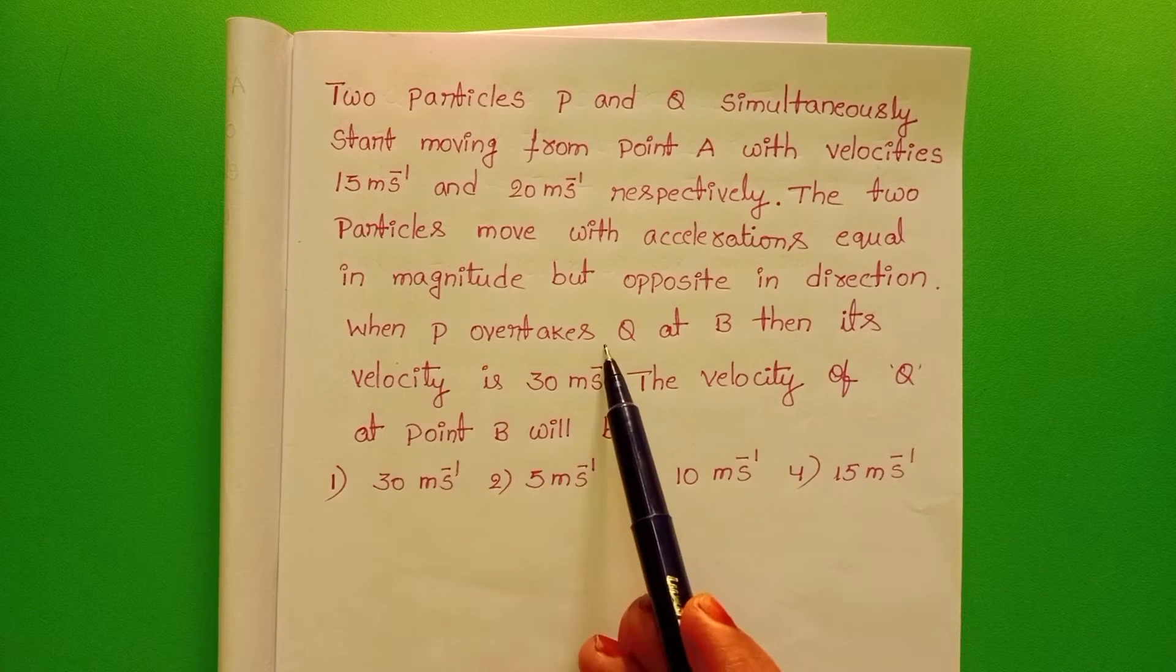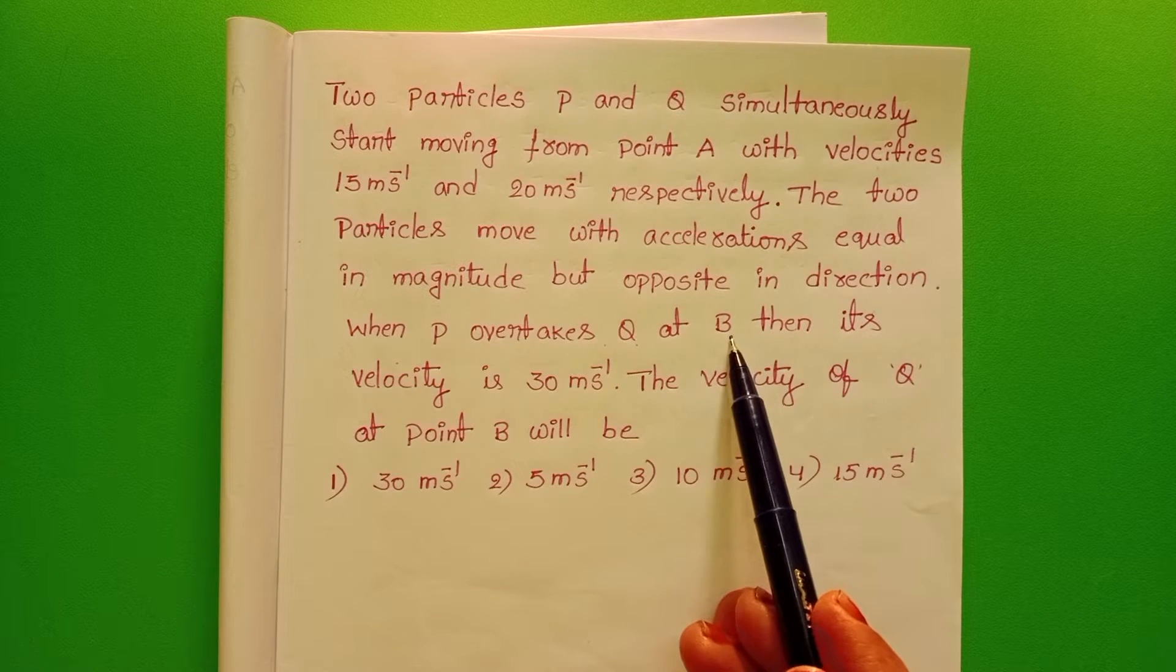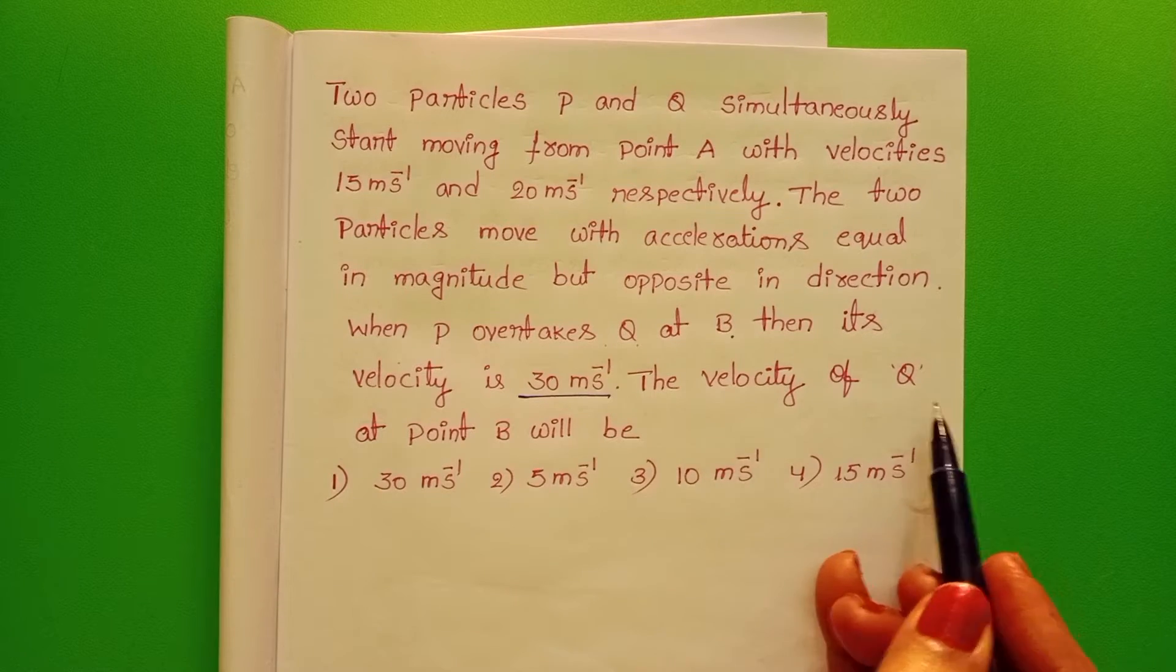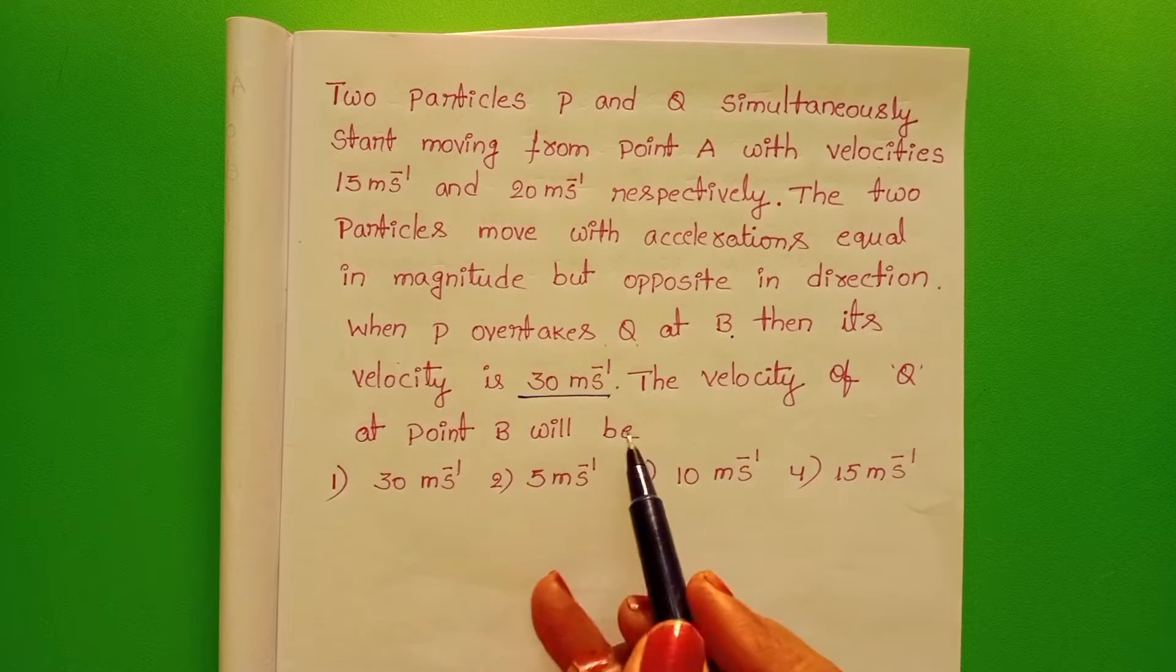When P overtakes Q at point B then its velocity is 30 m per second. The velocity of Q at point B will be?